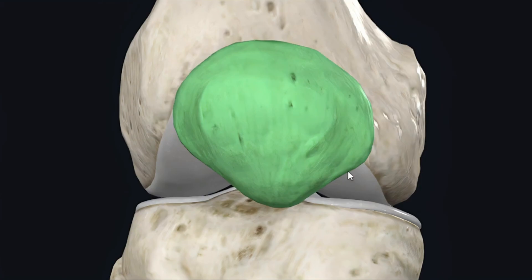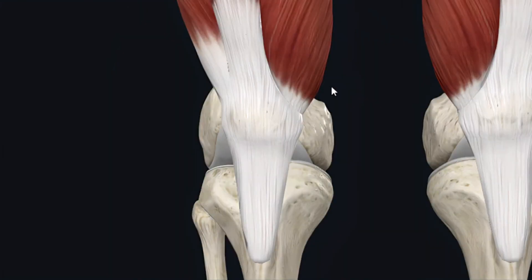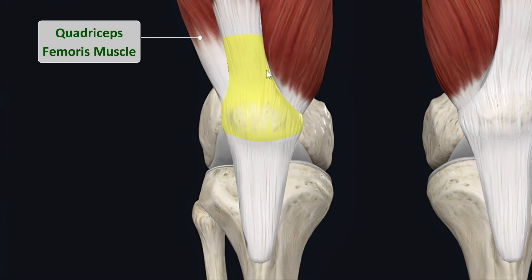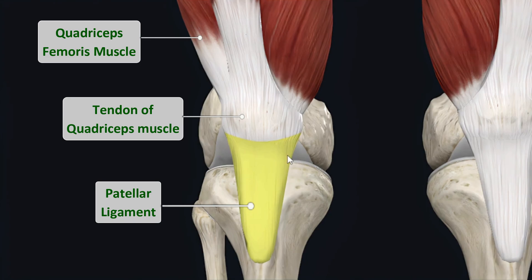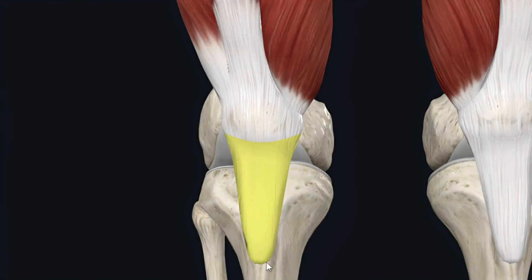Let me show you the quadriceps femoris muscle and its tendon. In this model we have the quadriceps muscle and its tendon — this is the quadriceps muscle and this is the tendon of the quadriceps femoris muscle, within which the patella bone is formed. You can also see this ligament or tendon which is called the patellar ligament, and this patellar ligament is the inferior continuation of the quadriceps tendon.